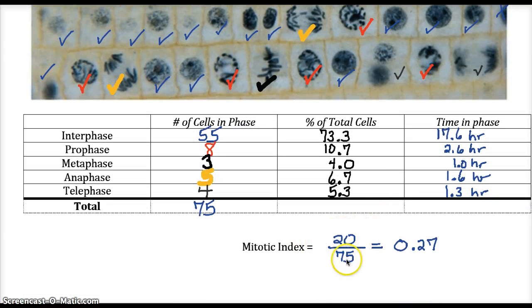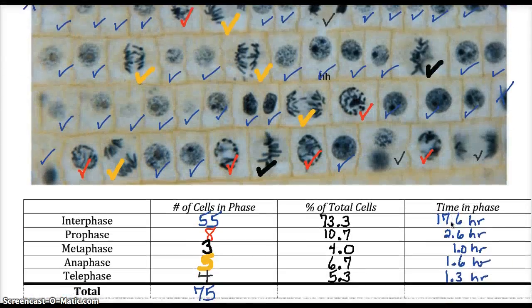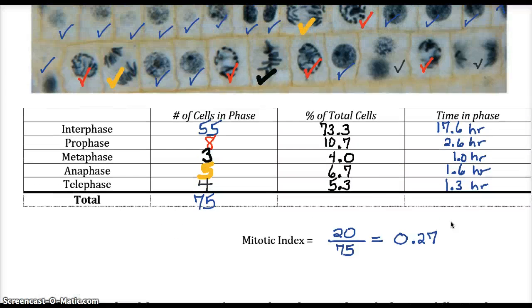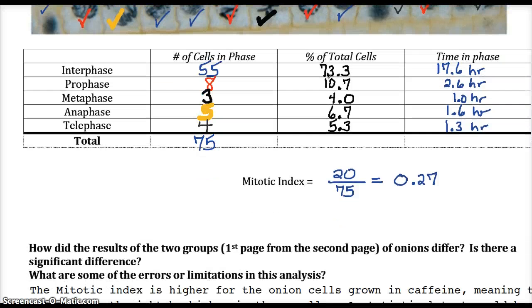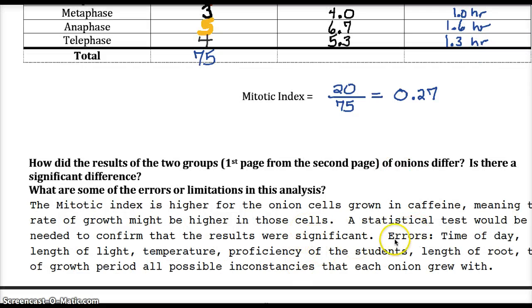The mitotic index, of course, is 20 over 75, and it's 0.27. If you notice, that's a little bit higher than 0.225. So you may say, these cells that are under caffeine had a faster rate of growth, because it was more mitosis going on. Careful. How do we know it's significant? How do we know that the cells, the onion that I got this from, wasn't grown in a warmer temperature or had more light? Or even the student who was doing the root tip squash was even good at it and found the right part of the tip. So there's many reasons for us not really believing the significance of this. We're going to learn about something called statistical tests to see if, in fact, this is a statistical difference considering all other things equal.